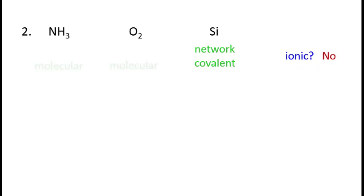So we conclude that ammonia and dioxygen are molecular. In ranking these materials, we already know which is the highest melting. That would be silicon.